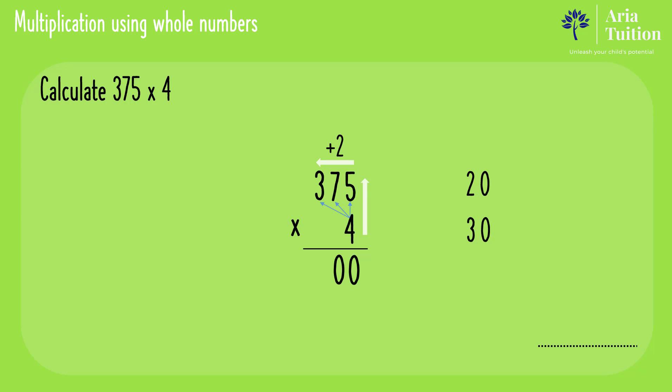Once again 30 is a two-digit number, so the zero units are written below and the three tens are carried on to the next column.